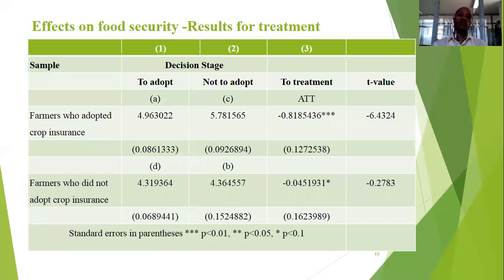On the effect on food security — that is the key result — you can see that farmers who adopted crop insurance: if they had not insured or had not adopted, their household food insecurity index would have increased by 0.82.